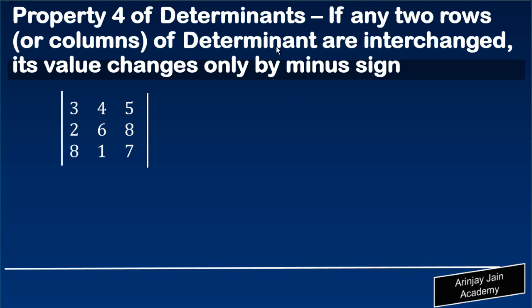Let's look at property 4 of determinants. What this says is that if any two rows or columns of a determinant are interchanged—this word 'interchanged' is important—its value changes only by a minus sign.